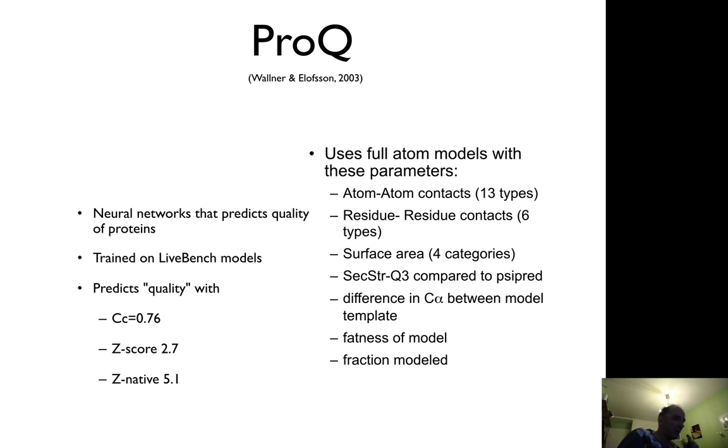So the idea is basically we calculate a number of features like atom-atom contacts, residue-residue contacts, surface areas, secondary structure, etc., from a model, and then use this as input to a machine learning method.